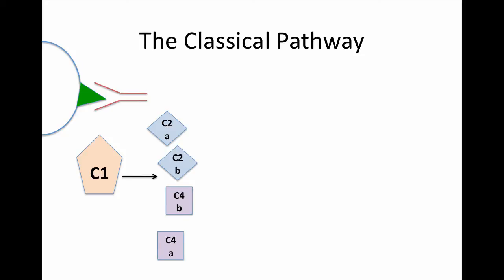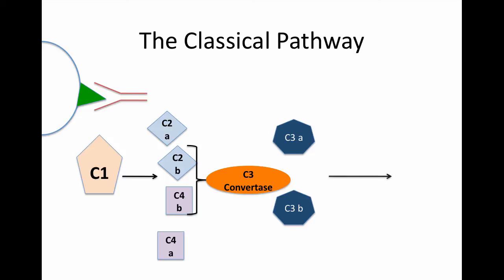Remember, C4 comes before C3. This is the only tricky part in the cascade. C2b and C4b will join together to make an enzyme known as C3 convertase. C3 convertase cleaves C3a and C3b. This later activates C5a and C5b.